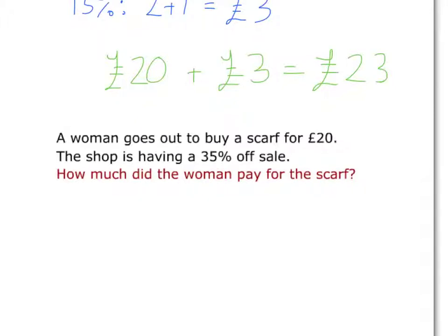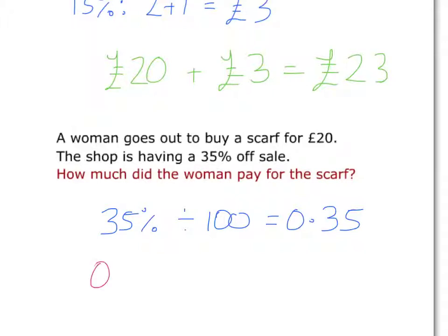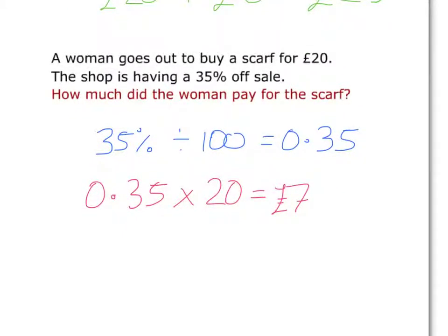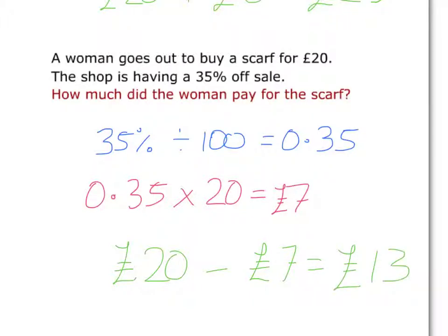Remember, to find 35% on a calculator, we first need to convert 35% into a decimal. To do that, we do 35% divided by 100, which gives us 0.35. Then we want to find 35% of £20 by doing 0.35 times £20, which is equal to £7. Because it's a sale, we take this off our initial £20, so we do £20 take away our £7 saving, leaving us with the scarf costing £13.